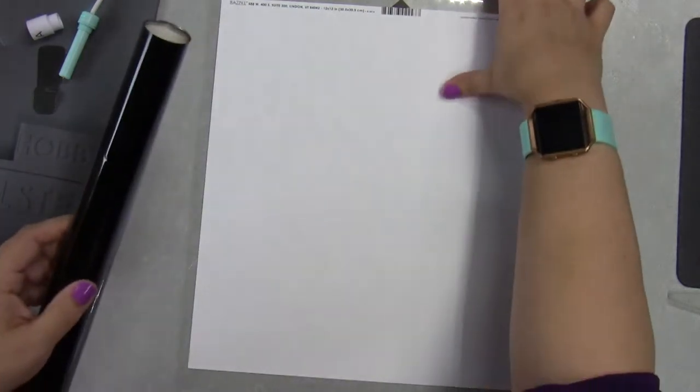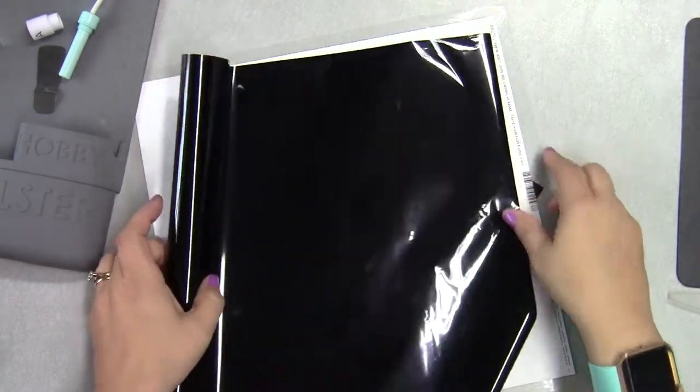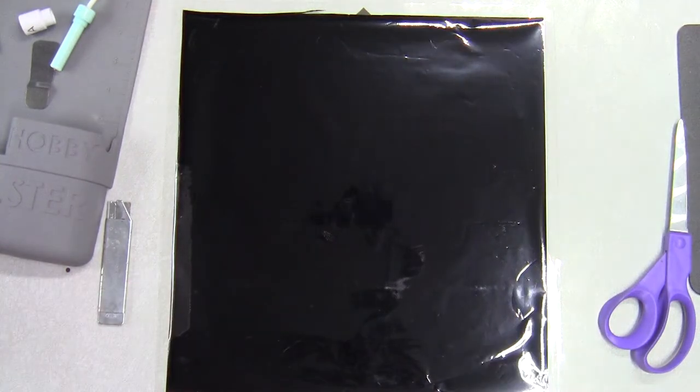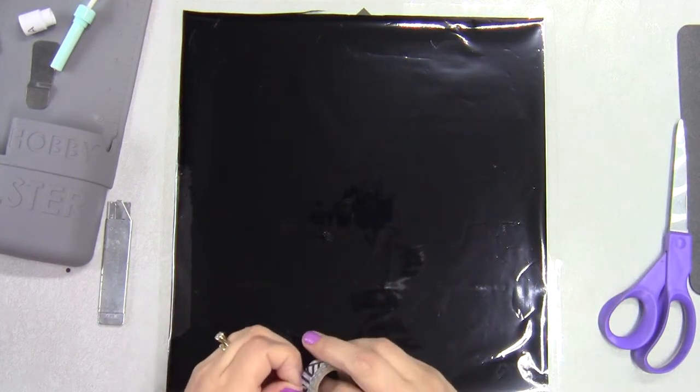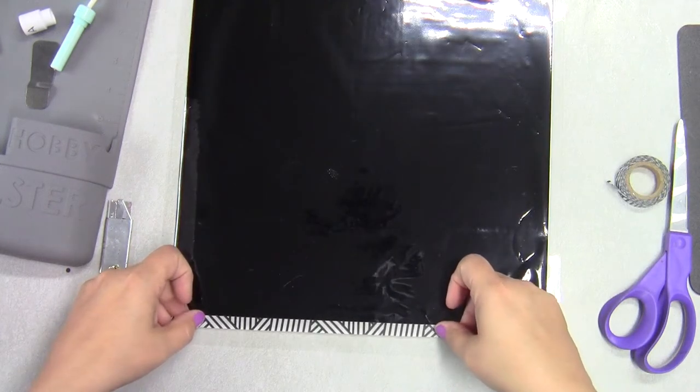I'm going to tape it down with some washi tape. Now, I'm not going to use the washi tape that they supplied because it's a little too wide. I want it more narrow, just so that it'll fit on my mat perfectly. You want to tape it down as smoothly as you can get it.